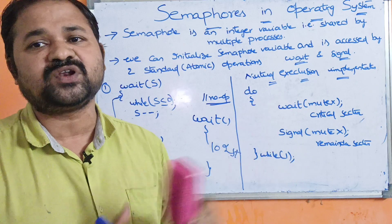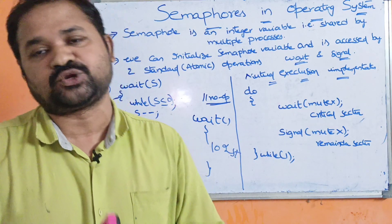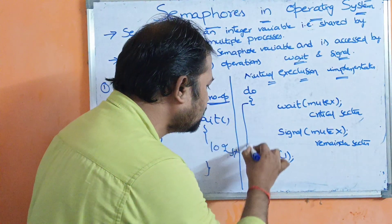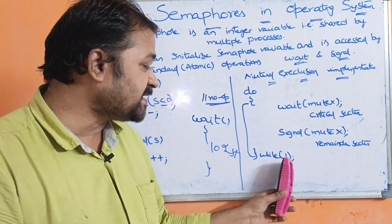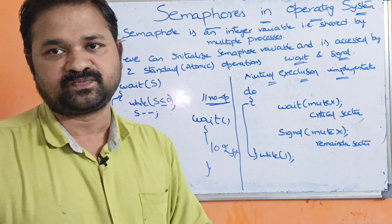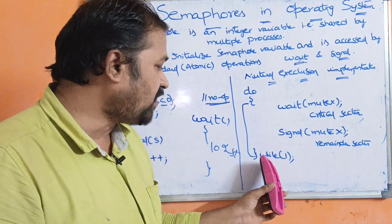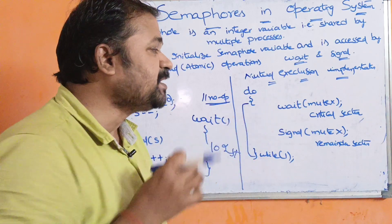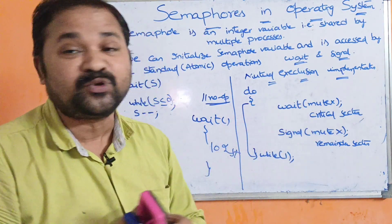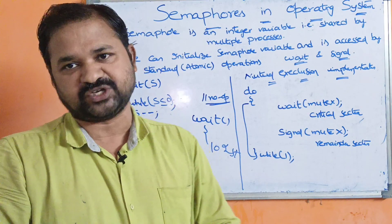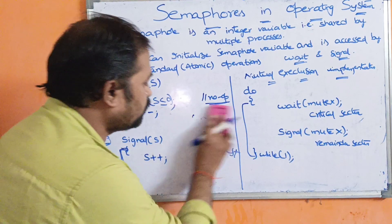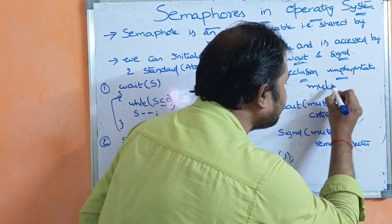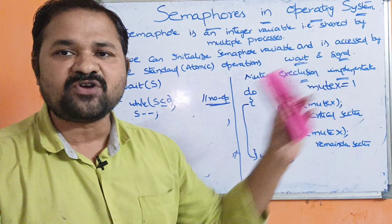Let us see how we can implement mutual exclusion. The code uses a do-while(1) loop, where 1 means the condition is always true. In order to implement mutual exclusion, we take a variable called mutex, where mutex stands for mutual exclusion. Mutex is the semaphore variable, and its initial value is 1. We know that we can initialize the semaphore variable value — so the initial value of mutex is 1.